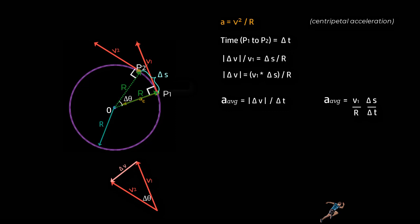Now, if you want to find instantaneous acceleration, a at point p1, we can use the techniques that we've learned in the earlier lessons. That is, we take the limit of this expression as we move point p2 closer to point p1. And we can therefore write instantaneous acceleration as a is equal to v1 upon r times delta s upon delta t as the limit of delta t tends to 0.